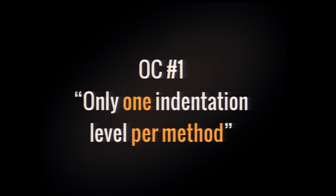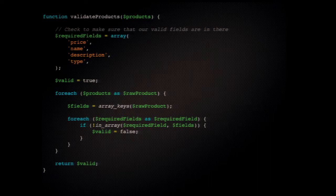Rule number one: only one level of indentation per method. This brings out the whole separation of concerns. If your function has more than one level of indentation, it probably means it's doing something it shouldn't — it's taking care of more than it should and it's really hard to understand. Let's look at it by example. I got this function from a friend: it basically validates a product list, checking if they have all the required fields.